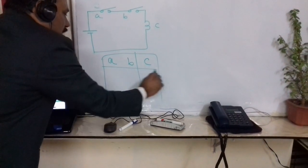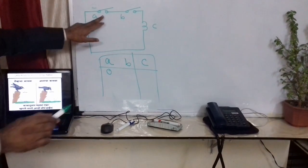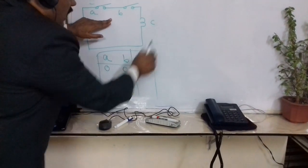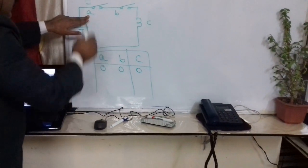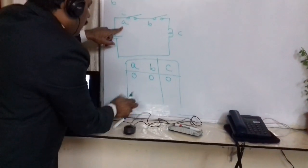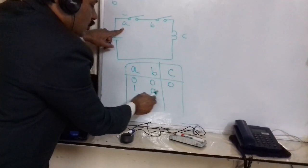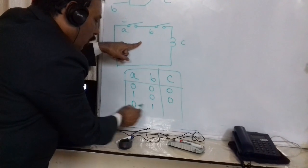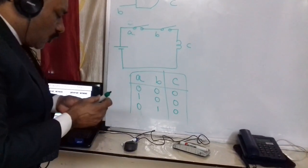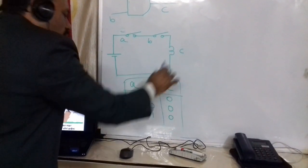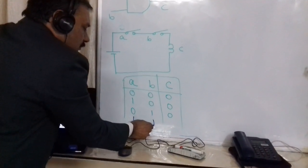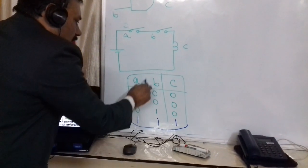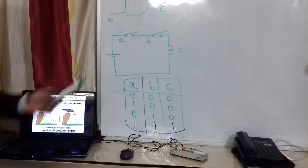In the truth table: when A=0 and B=0, output C=0. When A=1 and B=0, output C=0. When A=0 and B=1, output C=0. Only when A=1 and B=1 does output C become 1. This is the truth table for the AND gate.